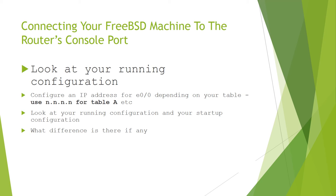Lab exercise: connect your PC or BHD machine to the router console port. Look at your running configuration. Configure an IP address for ethernet 0/0 depending on your table — use the IP address for table A, etc. Then look at your running configuration, interface configuration, and your startup configuration. What differences are there, if any?